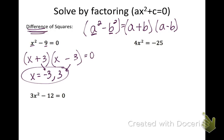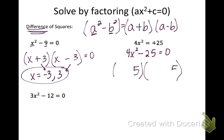Next, we need to get everything on the same side. Note: I meant to make that a negative — so let's change the problem so we subtract the 25 over and get four x squared minus 25 equals zero. Now we have a difference of squares. The square root of 25 is five, so five goes in the second spot of each parenthesis with a plus and a minus. The square root of four x squared: the square root of four is two and the square root of x squared is x. Setting both equal to zero, you should get positive and negative five over two.